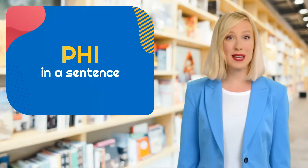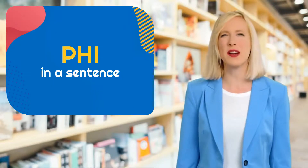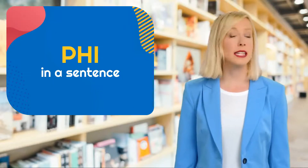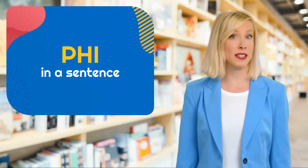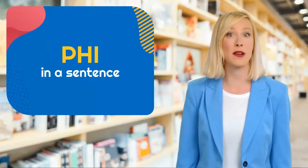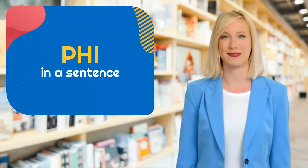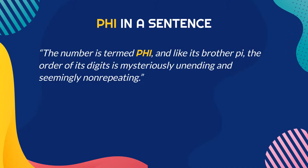Awesome! You learned that quickly. Let's put it in a sentence to understand how to use it. First example: The number is termed phi, and like its brother pi, the order of its digits is mysteriously unending and seemingly non-repeating.